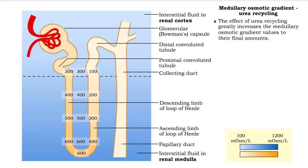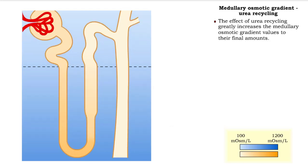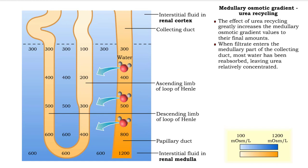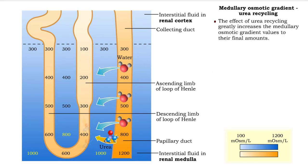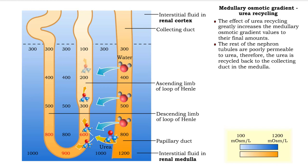The effect of urea recycling greatly increases the medullary osmotic gradient values to their final amounts. By the time the filtrate enters the medullary part of the collecting duct, most of the water has been reabsorbed, leaving urea relatively concentrated. Collecting duct cells are highly permeable to urea, so urea diffuses into the medulla, thus increasing the interstitial osmolarity. Once in the interstitial fluid, the urea enters the filtrate again via the cells in the bottom of the loop of Henle. The rest of the nephron tubules are poorly permeable to urea.